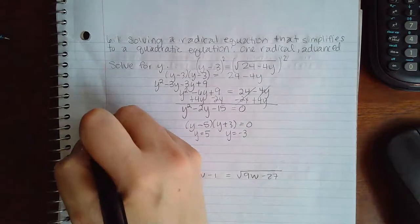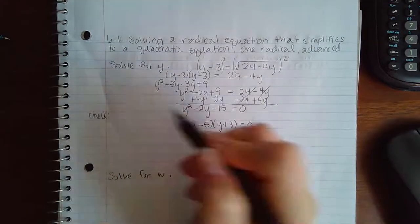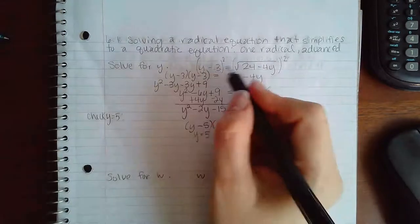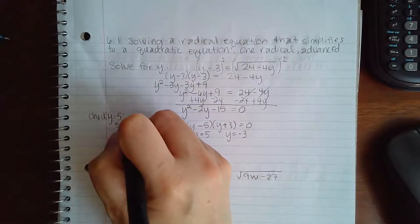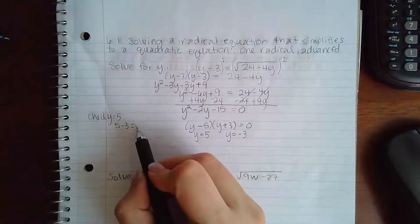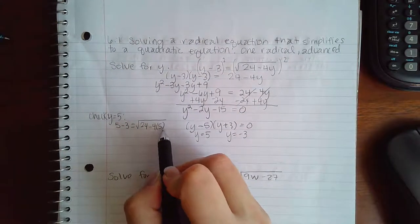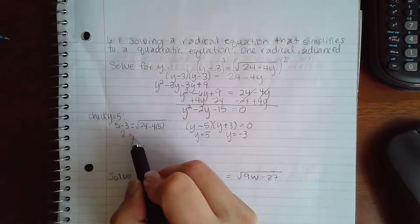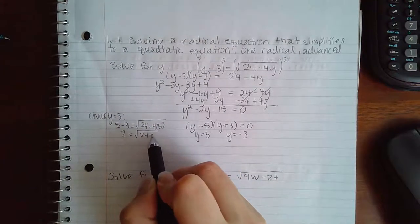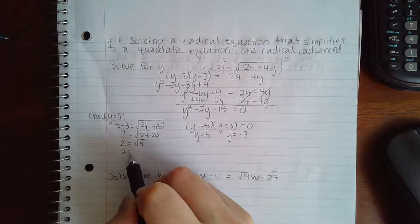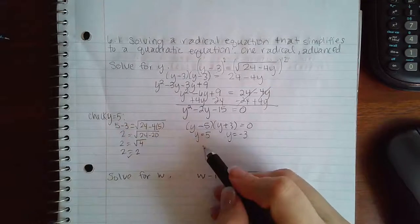Now I do have to check those solutions though. So check y equal to 5 means I will have 5 minus 3 equal to the square root of 24 minus 4 times 5. So this is 2, this is 24 minus 20, which is the square root of 4, and the square root of 4 is 2. So this one does check out.